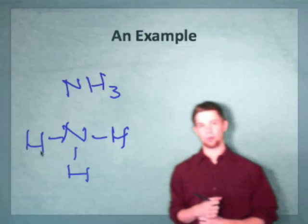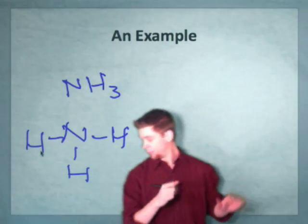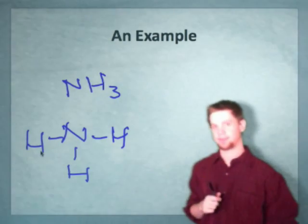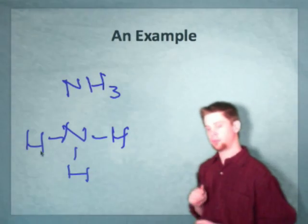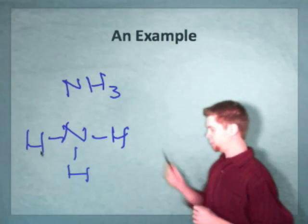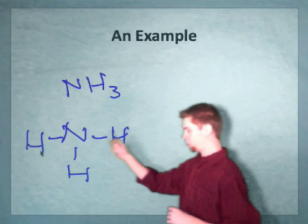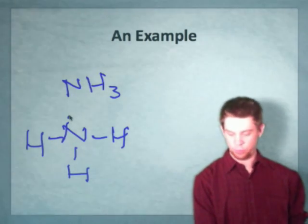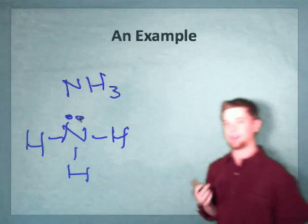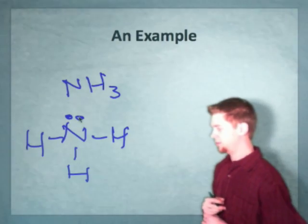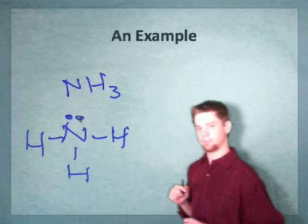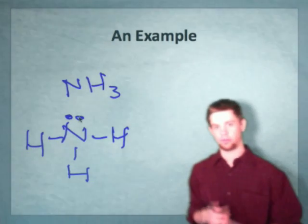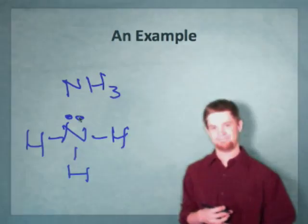Once you've got the sigma structure down, then move to thinking about lone pairs. For instance, we see here in NH3 that everything is taken care of, essentially, except for an octet on the nitrogen. And the nitrogen also appears to be missing two electrons. It possesses on formal charge terms three, one from each of the sigma bonds, but it's missing a pair. If we add that pair in, we see we take account of both problems at once. The nitrogen now has an octet. Considering the sharing of electrons, then nitrogen possesses eight electrons. And on formal charge grounds, it's now neutral. So take account of high bonds and lone pairs last when you're drawing Lewis structures. And that's really all there is to it. Thank you.